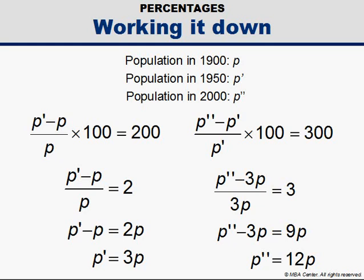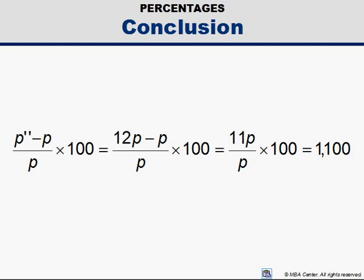But be careful. This doesn't mean the percentage increase was simply 1200. In fact, if we use the proper formula, plugging in 12P for P'', we find that the percentage increase from P to P'' was only 1100.